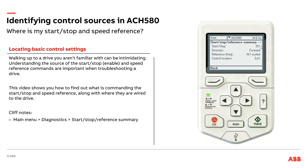My start/stop is landed on Digital Input 1, and my speed reference is set up as an analog input reference on AI1. Had I been getting a signal over the embedded fieldbus like BACnet, or if my start/stop was over BACnet, I'd be able to see that here. But in this case, it's hardwired — Digital Input 1 for my start/stop, Analog Input 1 for my speed reference. Those also happen to be factory defaults.